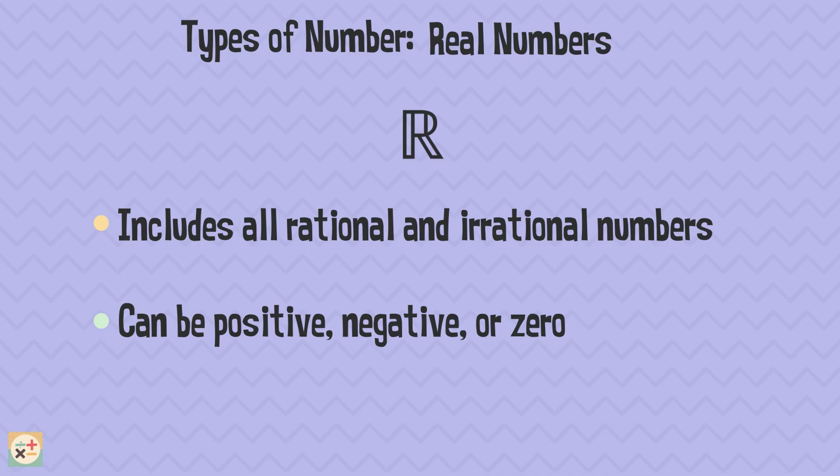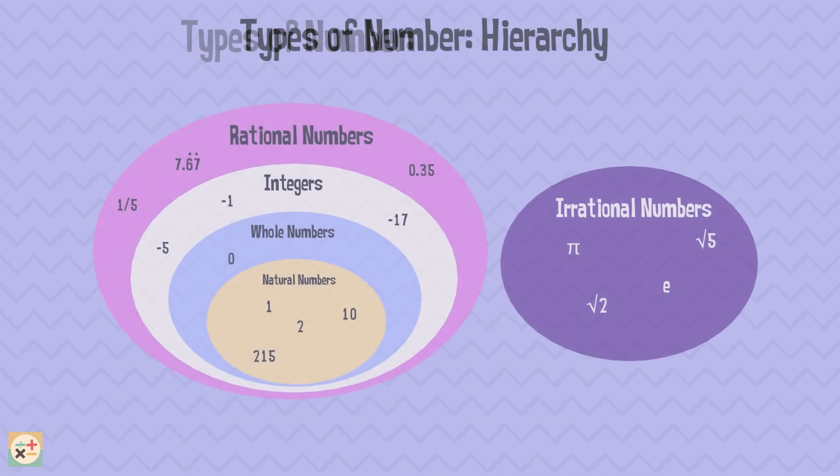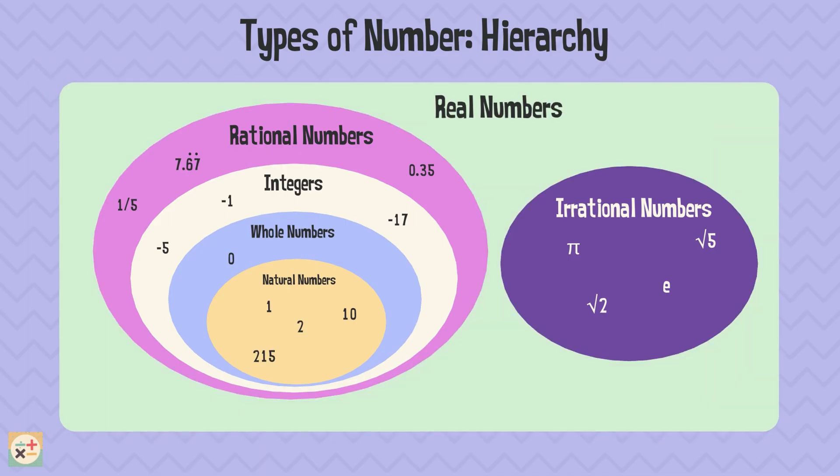This means that all the numbers we've talked about so far, natural, whole, integers, rational, and irrational, are all real numbers. Let's look at our diagram again. We can use real numbers to describe all of these other sets of numbers.